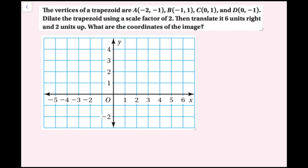For example four, the vertices of a trapezoid are a(-2, -1), b(-1, 1), c(0, 1), and d(0, -1). Dilate the trapezoid using a scale factor of two, then translate it six units right and two units up. First I'll plot the original figure in blue: a is (-2, -1), b is (-1, 1), c is (0, 1), and d is (0, -1).